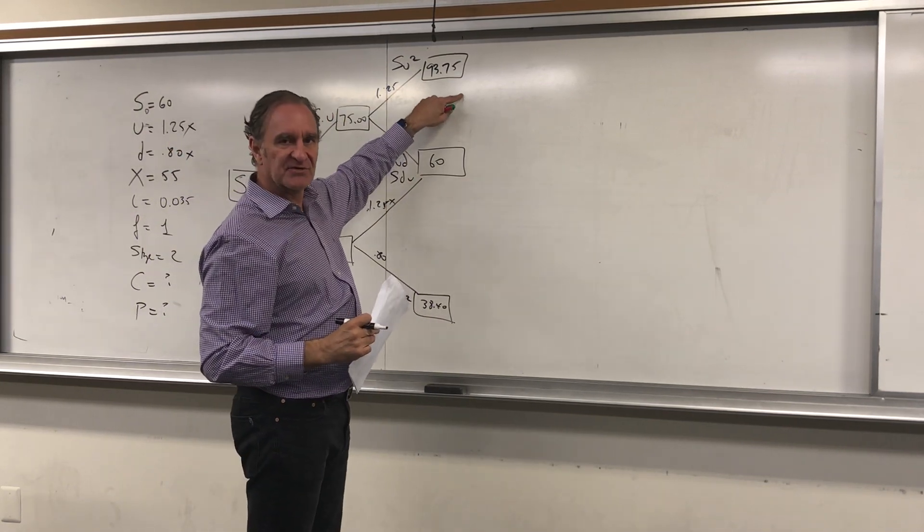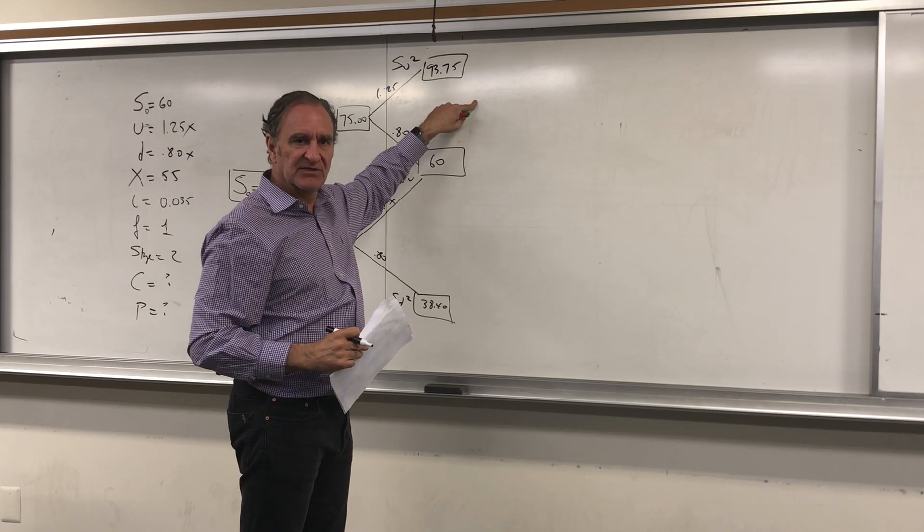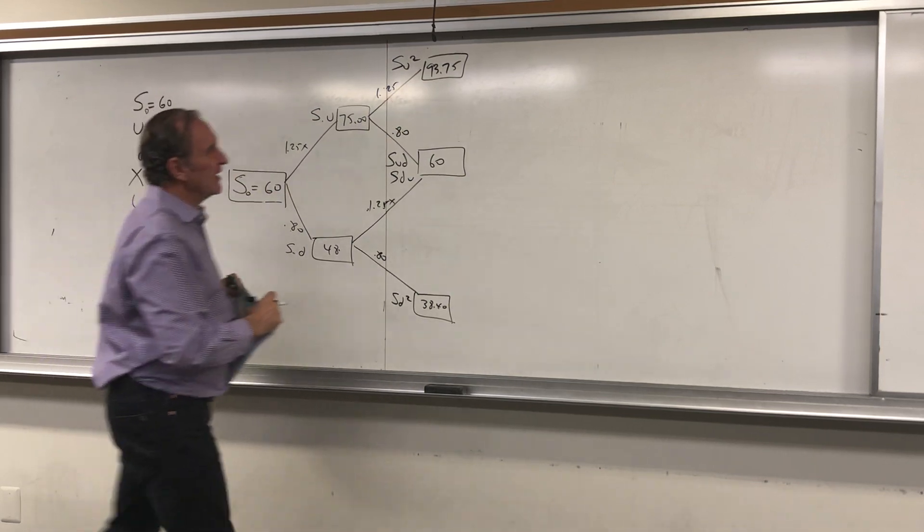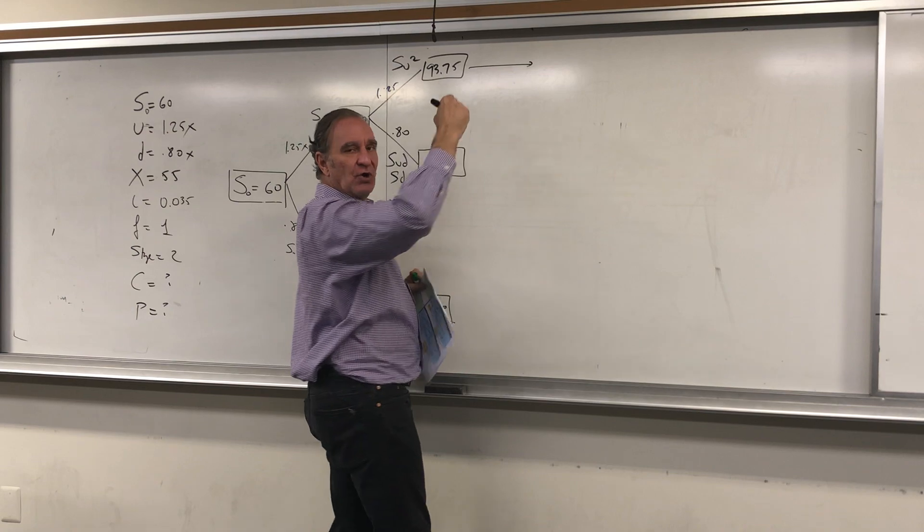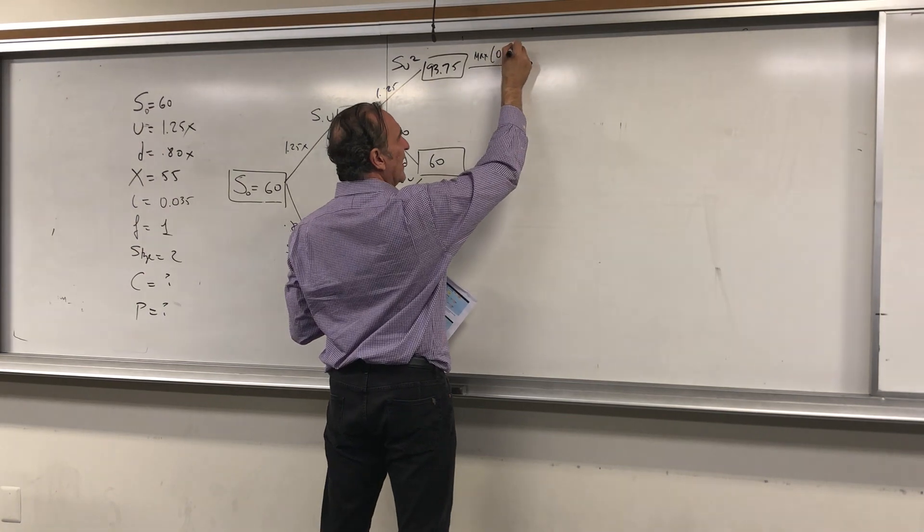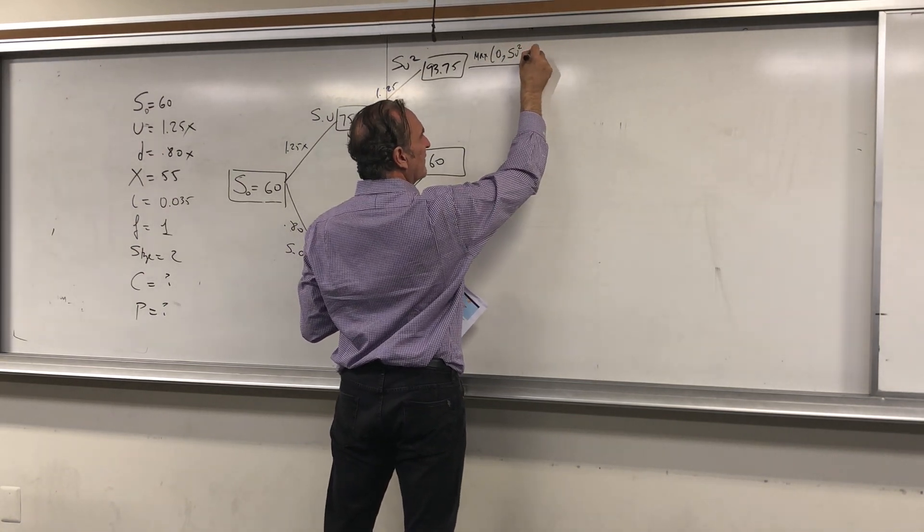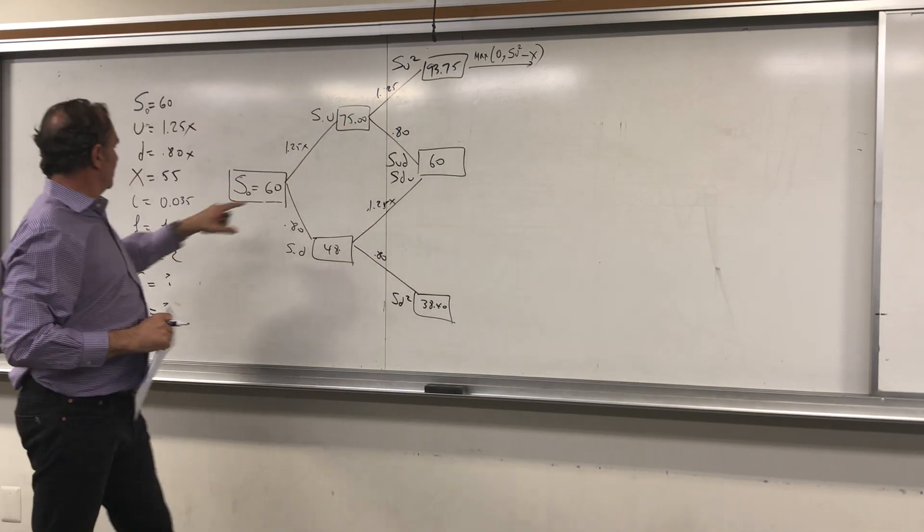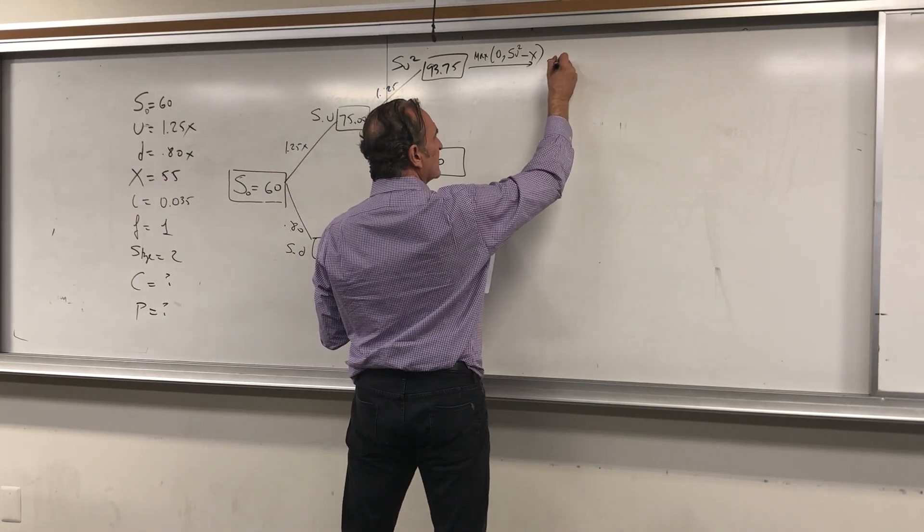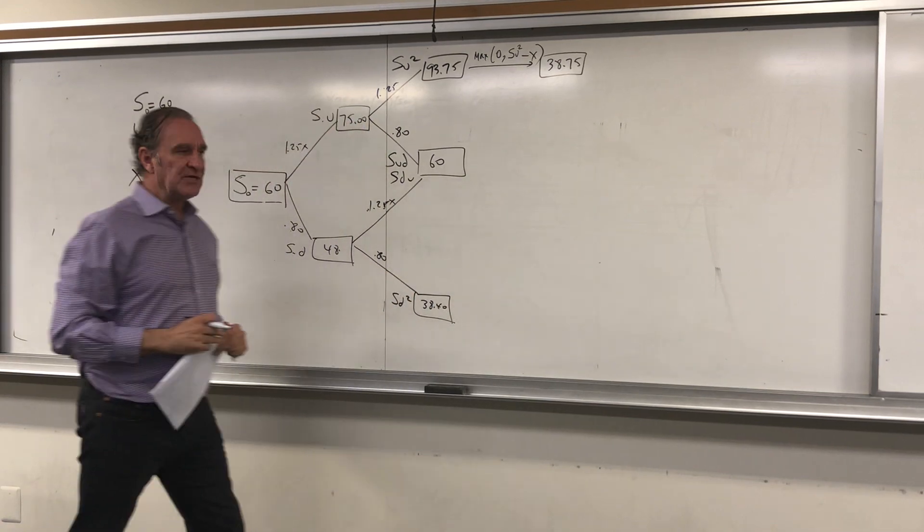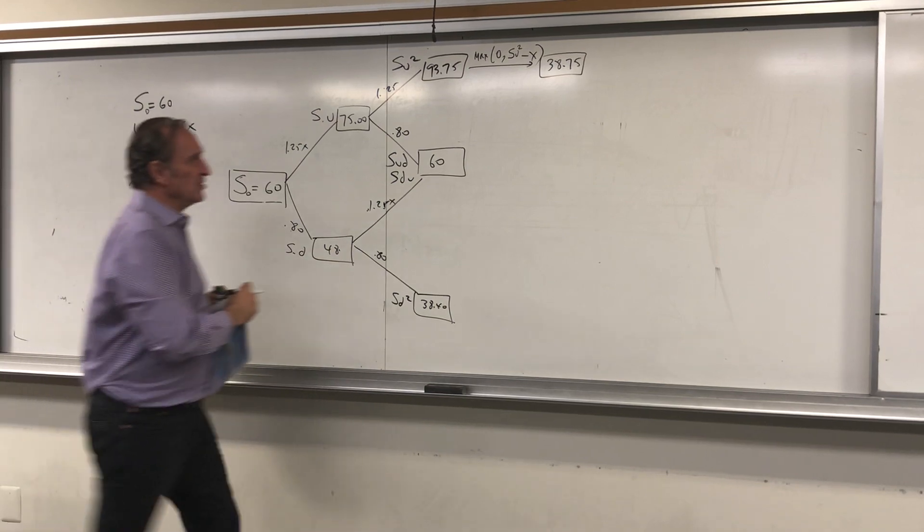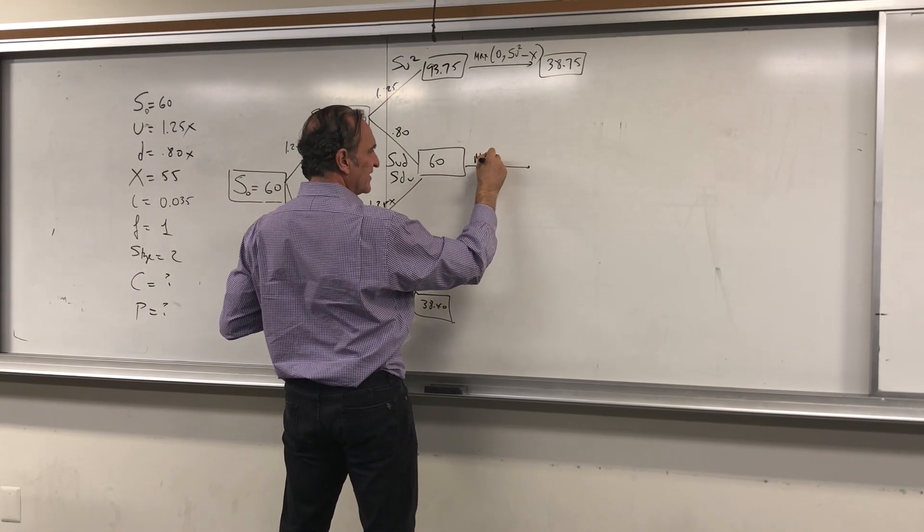Now we ask our question: if indeed the stock goes to the highest level possible twice—$93.75—would you exercise the call option? Of course, because 93.75 is higher than the X, which is higher than the X. Here we're going to try to get the payoff. As you know, the payoff for a call option is maximum of zero or S (in this case SU squared) minus X. So 93.75 minus 55 is positive, and the difference is $38.75. Then you ask the question: would you exercise at $60? Yes, because $55 is the X, so here the payoff is maximum of zero or 60 minus 55, which is $5.